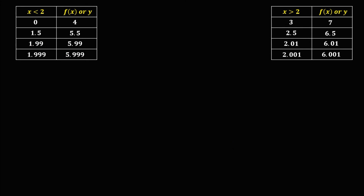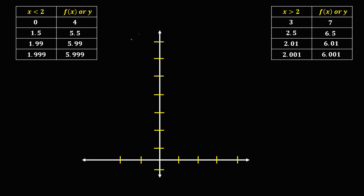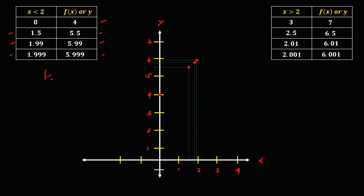To graph this limit, we use the two tables and plot the points. Setting up the axes, for the left-side limit: the point (0, 4) is plotted, then x = 1.5 is plotted, then x = 1.99 with y = 5.99 is plotted. These points represent the left-side limit converging toward positive 2 on the x-axis.